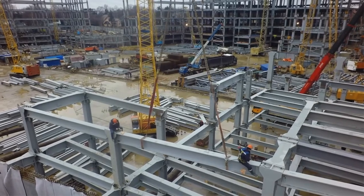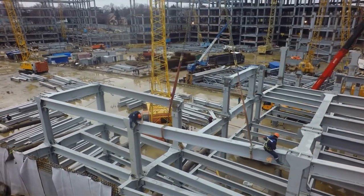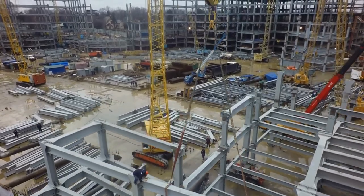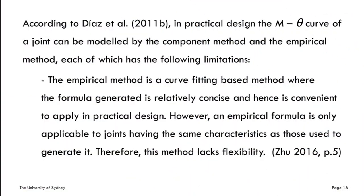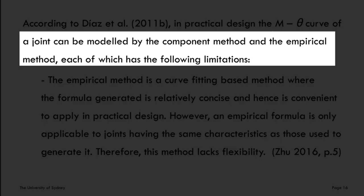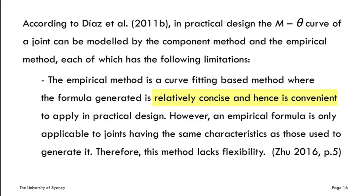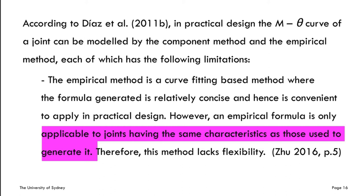The excerpt that you will read comes from a thesis on steel joints. If you are not an engineer, you might not find this topic terribly fascinating — but you do not want your building to collapse. Here, the writer is evaluating methods to model joints. Rather than saying that the methods are wrong, the writer points out the limitations in each method. Notice how the writer starts with the positive evaluation of the method, and the limitation is introduced afterwards via 'however.' This is a good rule to apply whenever you need to provide negative feedback: start with the positive. Notice also how the writer goes from very concrete — the characteristics of joints — to the abstract concept of flexibility. Navigating between concrete examples and abstract concepts is a feature of effective academic writing.